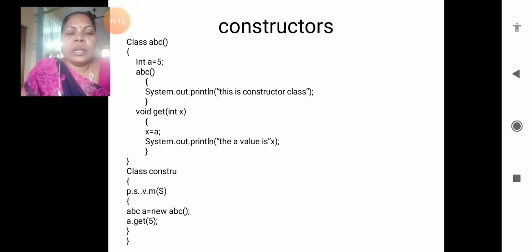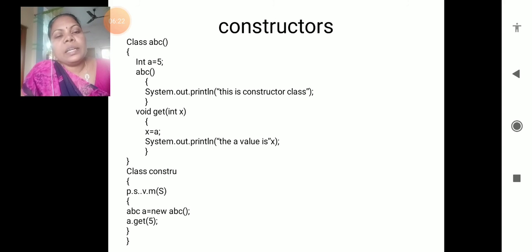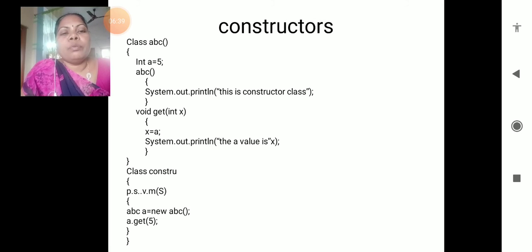For the constructor, creating the objects: public static void main, String args. ABC a is equals to new ABC. When you prepare the constructor name, it automatically invokes on object creation. That's why we never call a.abc - it automatically invokes the object, automatically calling the function.